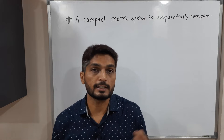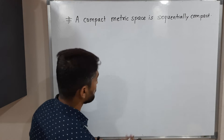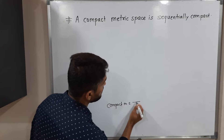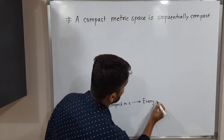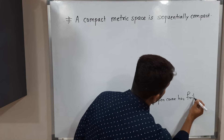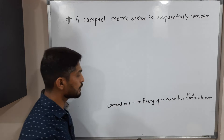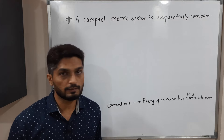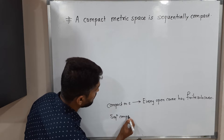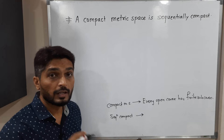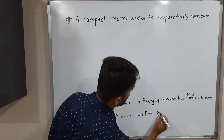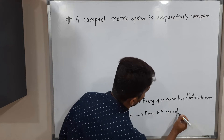When we say the metric space is compact and when we say it is sequentially compact — let me write here. Compact metric space means every open cover has a finite sub-cover. When we say the metric space is compact, if every open cover of X has a finite sub-cover, then we say it is a compact metric space. And when we say it is sequentially compact, if every sequence has a convergent subsequence, then we say it is sequentially compact.